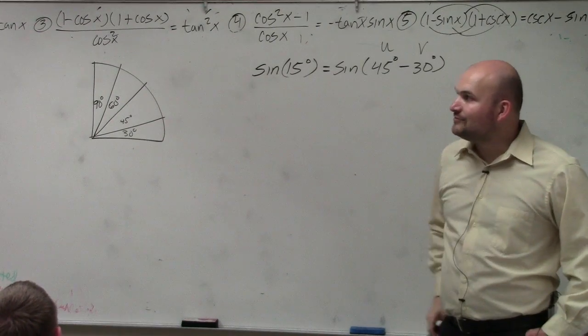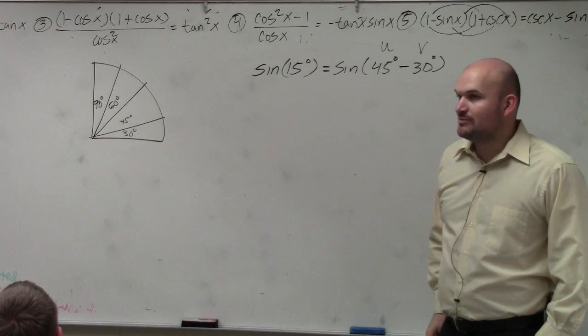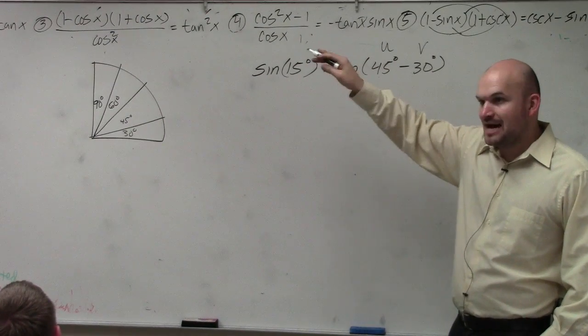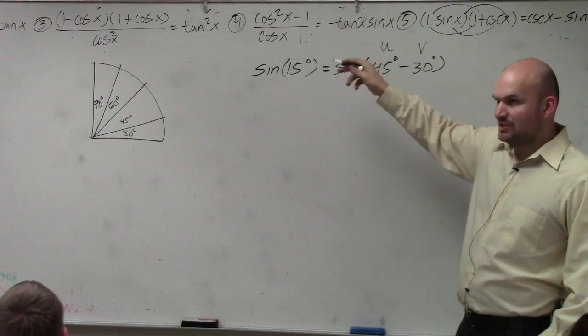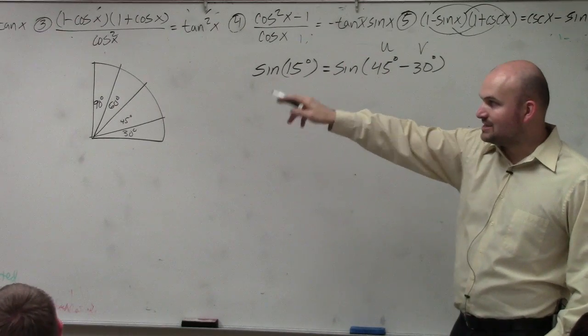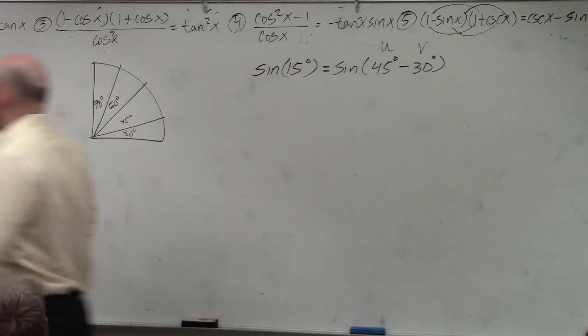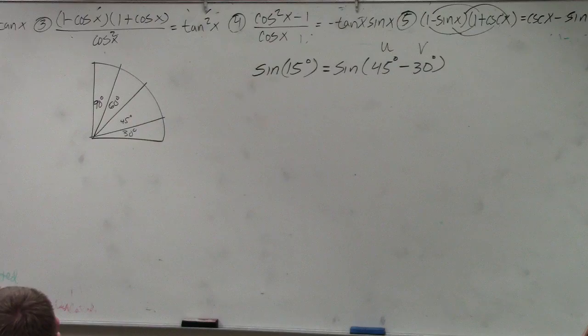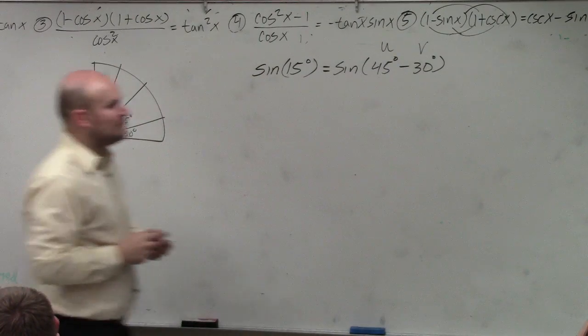So for the sine formula, it's u plus or minus v. So if it's u plus v, then the formula, you're going to do the top sign as well, plus and plus. See how cosine goes? You either do plus minus or minus plus. Plus plus, minus minus. Plus, plus, minus. Minus, minus, plus. So it depends on what the formula is.